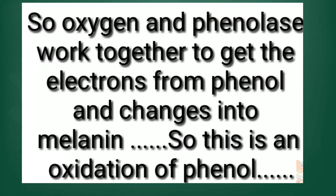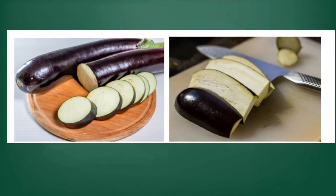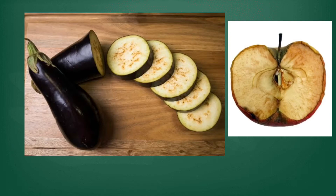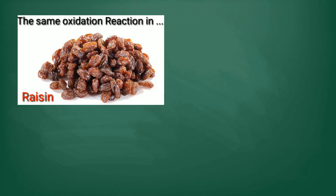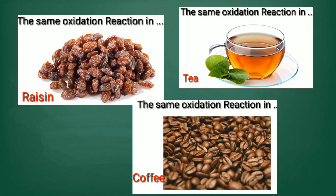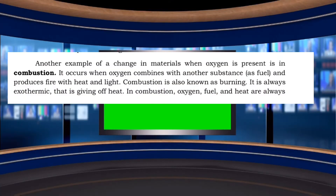So oxygen and phenolase work together to take the electrons from phenol and change it into melanin. This is the oxidation of phenol. When we cut fruits and vegetables and damage their cells, the inner flesh is exposed to oxygen in the air, which removes the electrons from phenol. Once phenolase and oxygen remove those electrons, the phenol becomes melanin and turns dark. The same oxidation reaction occurs in resin, coffee, and tea. Another example of change in materials when oxygen is present is combustion.